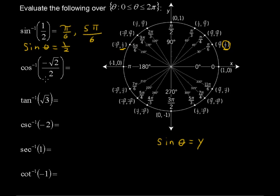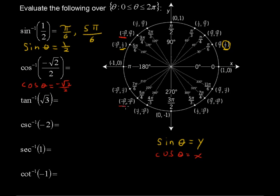On to the next one: the inverse cosine of the negative square root of 2 over 2. Cosine of theta equals the x coordinate on the unit circle. So we're asking where the x value equals negative √2/2. That happens here and here — at the angles 3π/4 and 5π/4 radians.